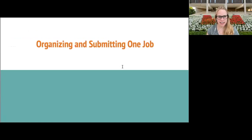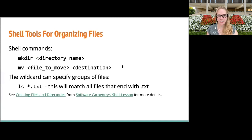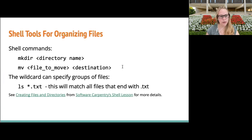We're going to start out by thinking about organizing and submitting one job before we then think about how to adjust our submit file to submit many jobs simultaneously. As a quick reminder, some shell tools for organizing files that will be helpful: mkdir stands for make directory; mv stands for move, to move files from one location to a different destination; and wildcards — the asterisk — for example, ls *.txt will list all files ending in .txt.